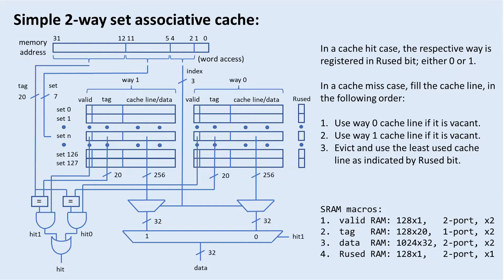This is a typical simple two-way set associative cache memory structure. The total cache size I have is only 8 kilobytes. I have four different memory macros in the functional block: a valid bit SRAM, a tag SRAM, a cache data SRAM, and also an SRAM macro for the LRU used bit.